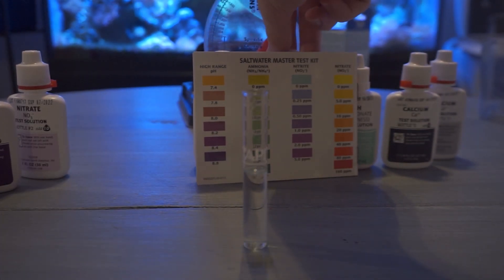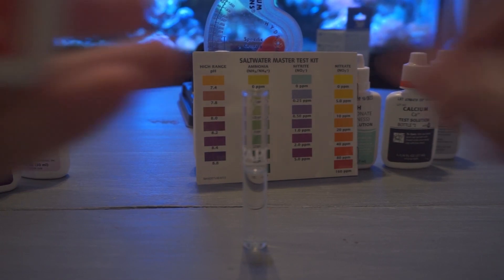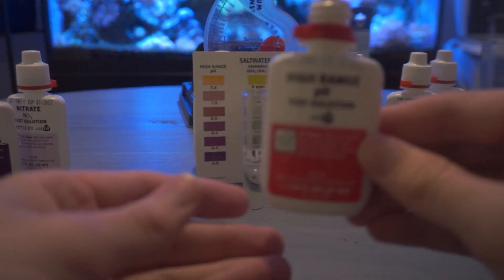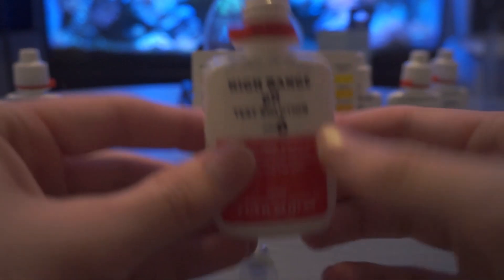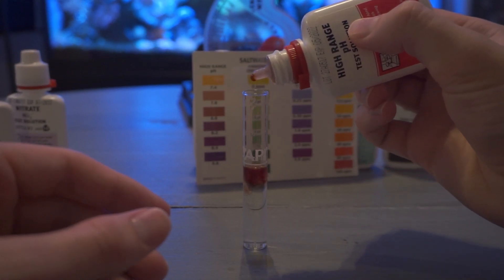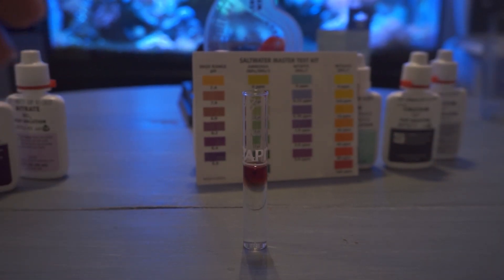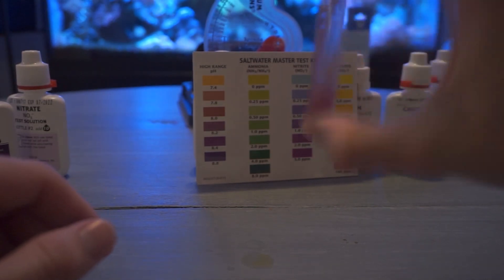Now once we get our next test tube ready we're going to be testing the high range pH. So this one we're usually trying to hit 8.1 to 8.4 in a saltwater tank. You definitely want to keep it in that range to keep your corals healthy. On the bottle it's real simple just add five drops shake it up and we'll see what coloration we get. We'll put the cap on give it a good shake and this one usually changes pretty quick for us but we'll still let it sit just in case.